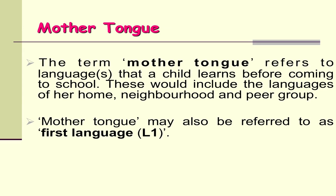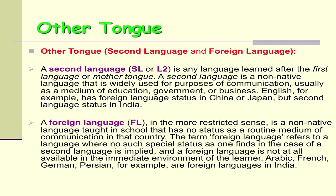Let us first understand what a second language is. We have terms like mother tongue and other tongue. We consider mother tongue to be the language that a child learns before she goes to school. This may include the languages of her house, home, neighborhood, and peer group. Any language that she learns after she has learned or acquired her mother tongue, we call that a second language.